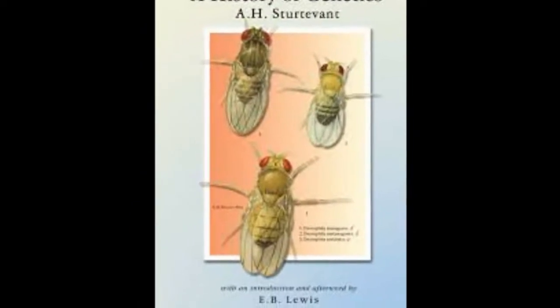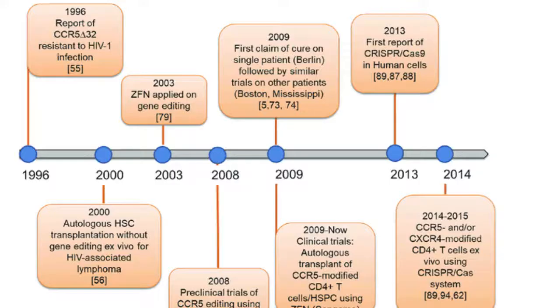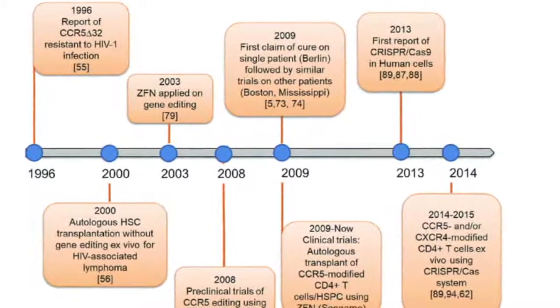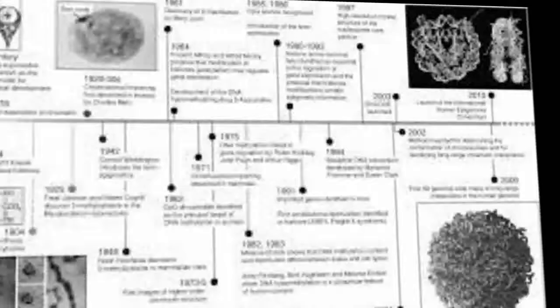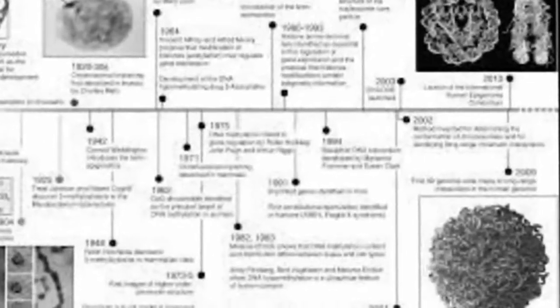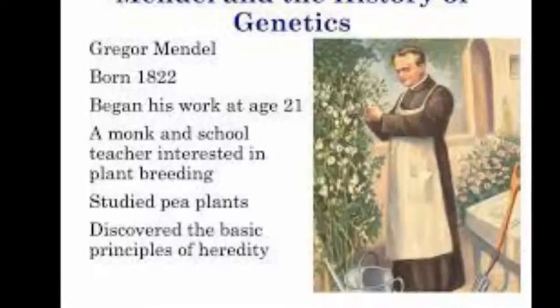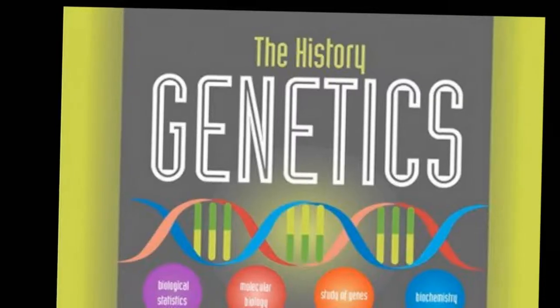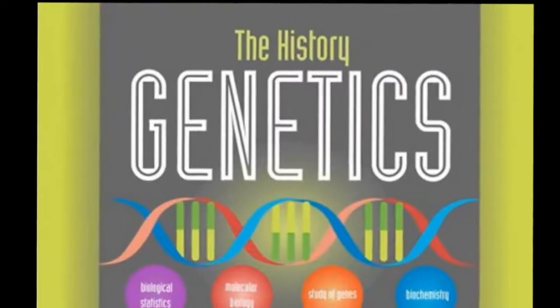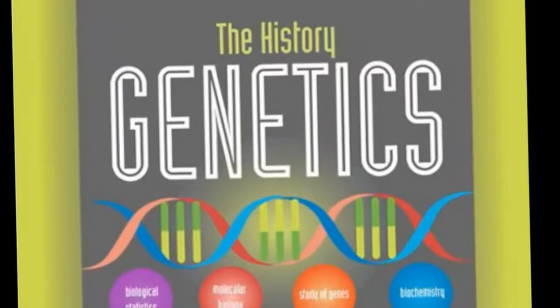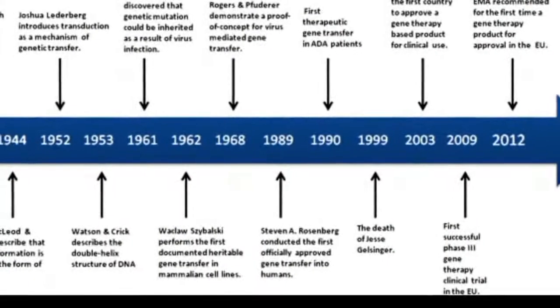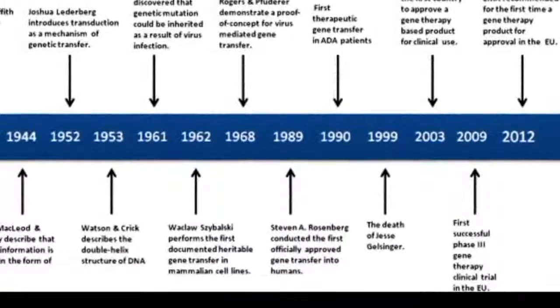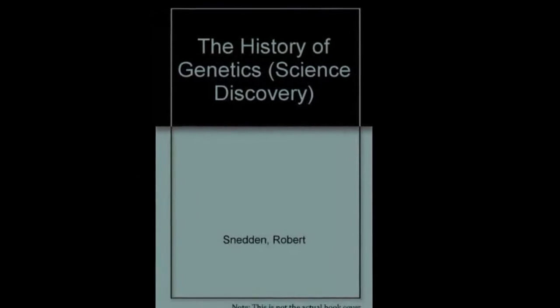In 1928, Frederick Griffith showed that genes could be transferred. In what is now known as Griffith's experiment, injections into a mouse of a deadly strain of bacteria that had been heat-killed transferred genetic information to a safe strain of the same bacteria, killing the mouse. This led to the realization that the genetic material is made of DNA and not, as was widely believed, of proteins. In 1941, George Wells Beadle and Edward Laurie Tatum showed that mutations in genes caused errors in specific steps of metabolic pathways, leading to the 'one gene, one enzyme' hypothesis. Oswald Avery, Colin Monroe McLeod, and Maclyn McCarty confirmed in 1944 that DNA holds the gene's information.